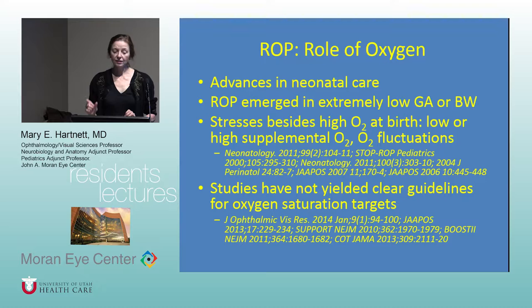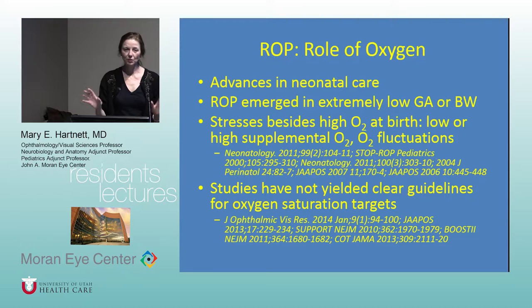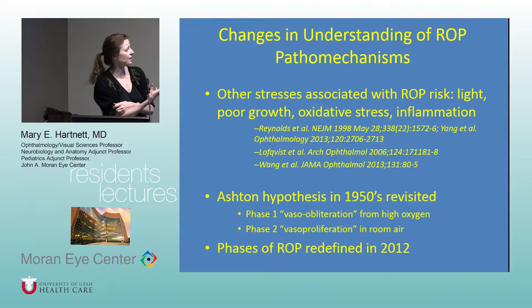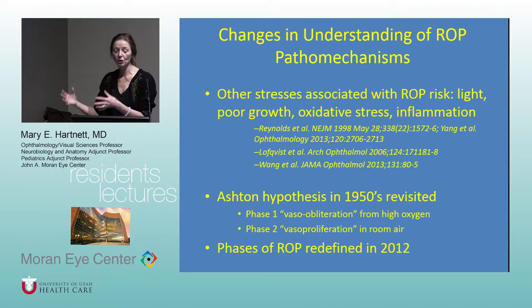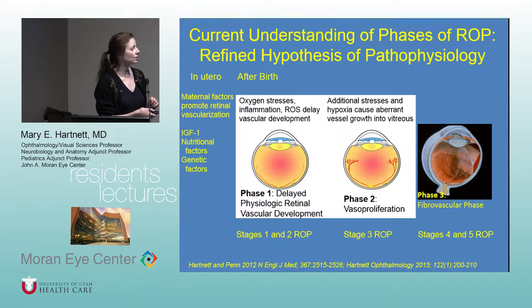Studies have not yielded clear guidelines on oxygen saturation targets. Large-scale multicenter clinical trials found that low oxygen saturation targets are associated with low ROP but also with increased mortality, with a lot of variability across sites. We just don't have the answer yet. In human ROP, we think more of phase one as really a delay in physiologic retinal vascular development — the vessels do not extend to the peripheral retina — and then in phase two there's vasoproliferation.